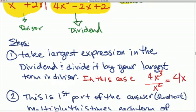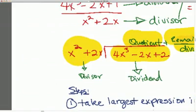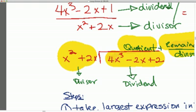What are the steps? Well, what you do is you take the largest expression in the dividend, which is inside the division line, and divide it by the largest expression in your divisor. So in this case, if you're looking at this problem, we would look at the 4x squared here and divide it by the x squared here.